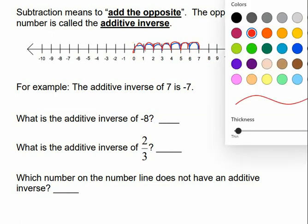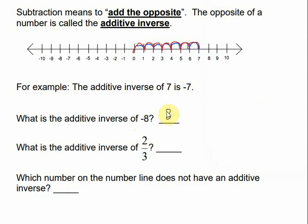Let's find the additive inverses of some numbers. What is the additive inverse of negative 8? It's just the opposite, so it would be positive 8. What is the additive inverse of 2/3? Since 2/3 is positive, the additive inverse would be negative 2/3. Which number on the number line doesn't have an additive inverse? Zero, because there's no negative zero.